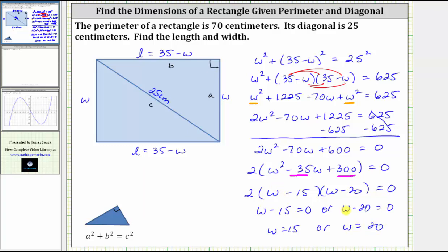Now we have the information we need to answer the question. The length L, again, is equal to 35 minus W. Let's use W equals 15, which gives us 35 minus 15, which equals 20. And this is the length. It would be 20 centimeters.